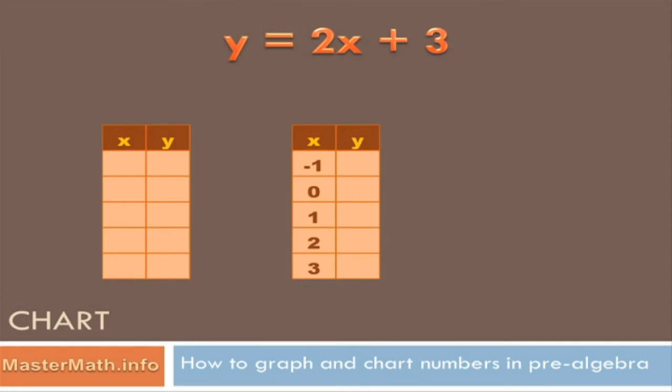For each of those values there's a corresponding y value. Now how do we figure that out? Well let's look at minus 1 first. If we substitute minus 1 for x in our equation, then we can recalculate that equation with the value minus 1 for x and it results in an answer of y equals 1.